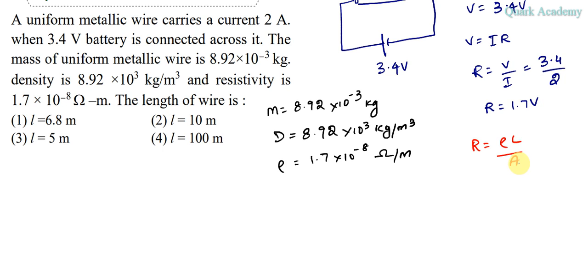To eliminate the area, I'm multiplying and dividing by length, so R = ρL²/(AL). Area times length is volume, so we'll get R = ρL²/V, but we don't have volume either.